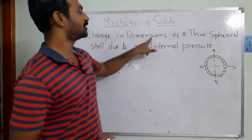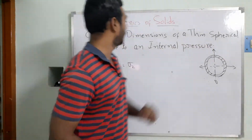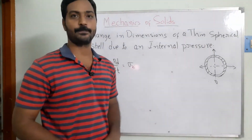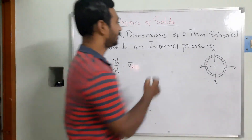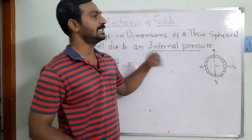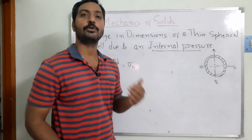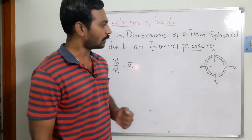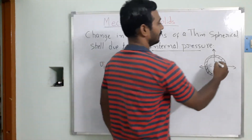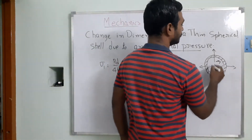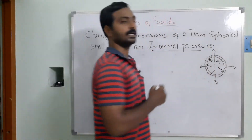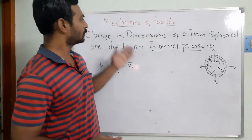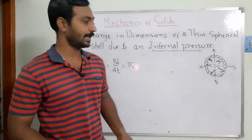Now we are going to talk about the change in dimensions of a thin spherical shell due to internal pressure. These thin cylindrical or thin shells are used to store fluid under certain pressure. The pressure acts inside, the material absorbs it and a resistance force develops, so our main aim is to find out how the dimensions are going to change.